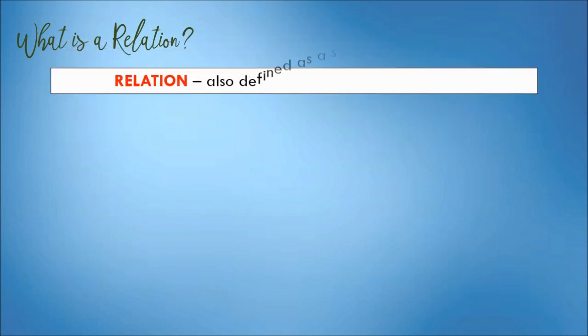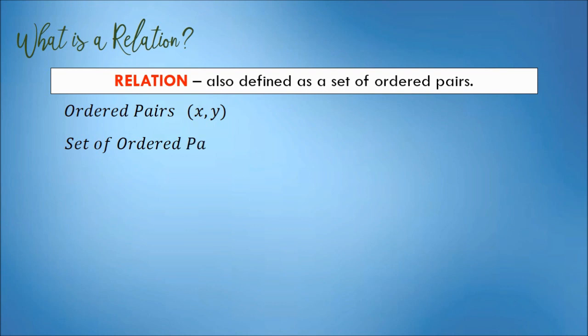A relation is also defined as a set of ordered pairs. Ordered pairs are in the form of x comma y, enclosed in a pair of parentheses. But if it is a set of ordered pairs, the ordered pairs should be separated by commas, enclosed in a pair of braces.